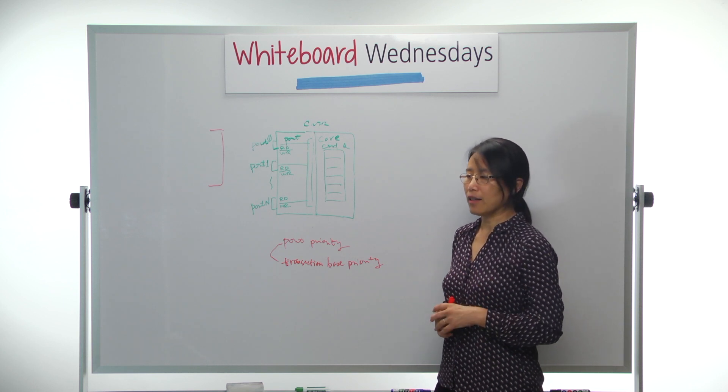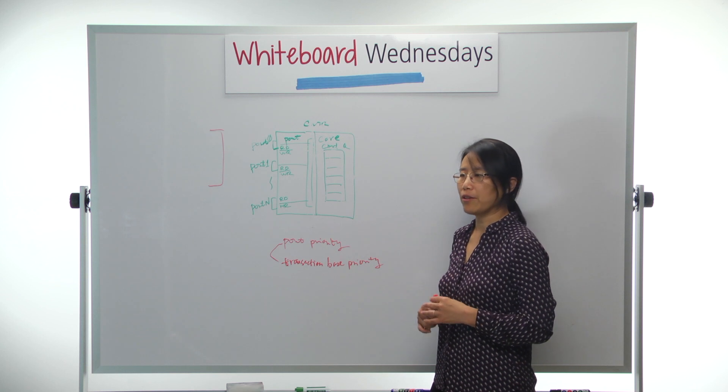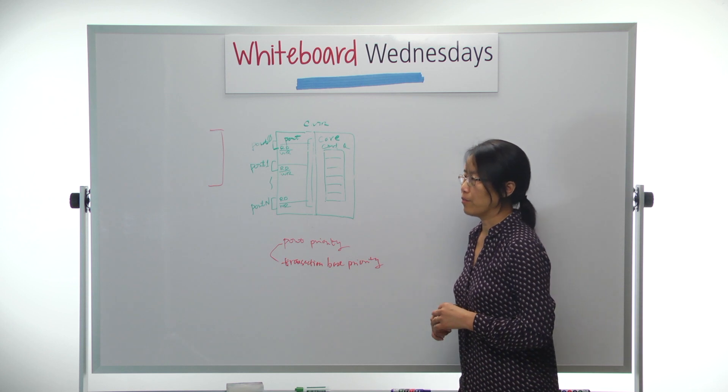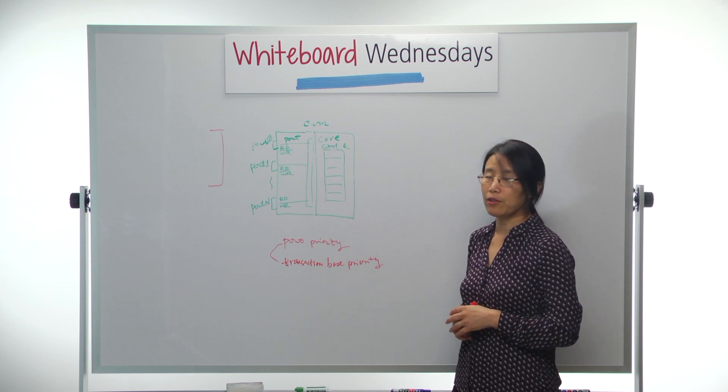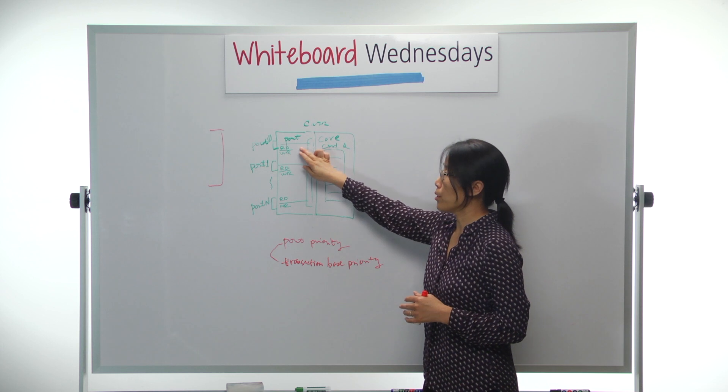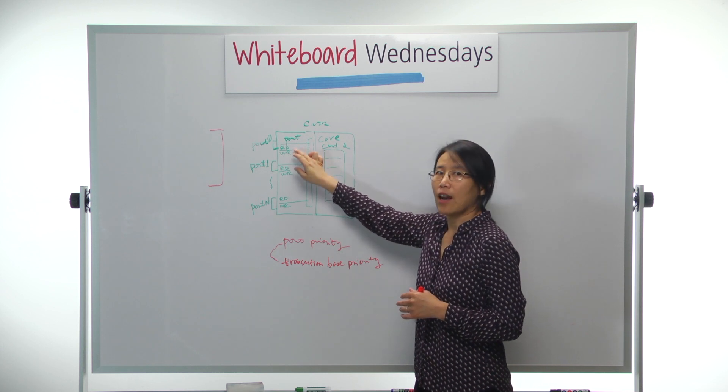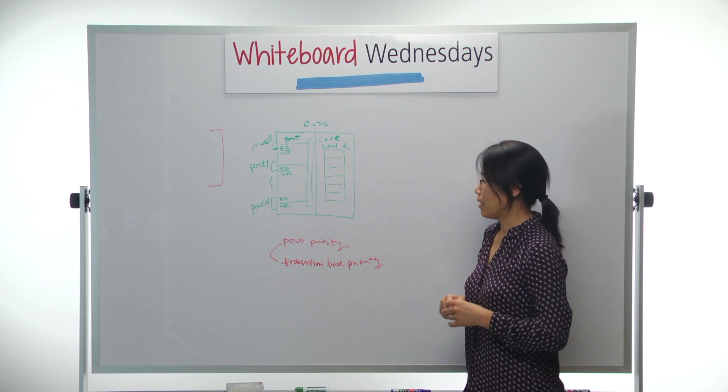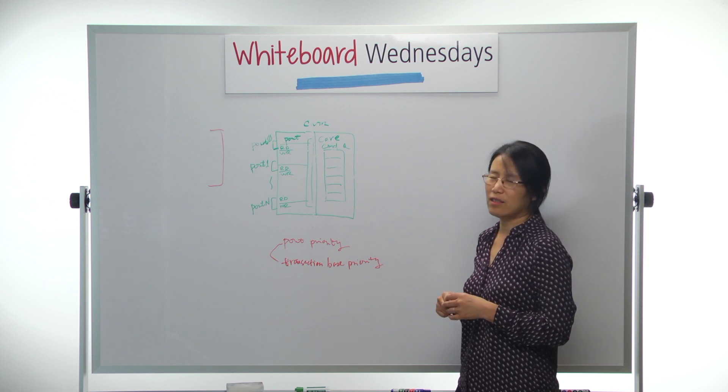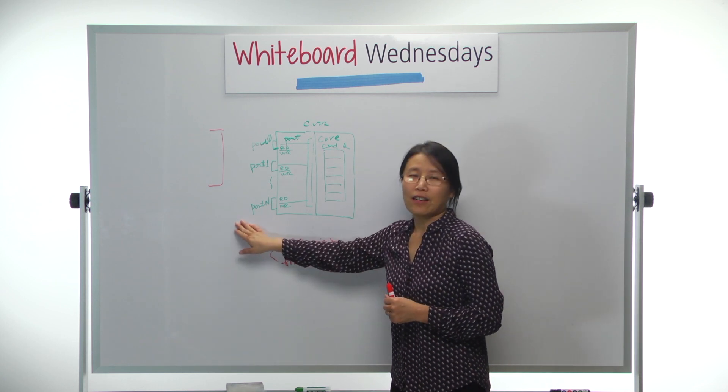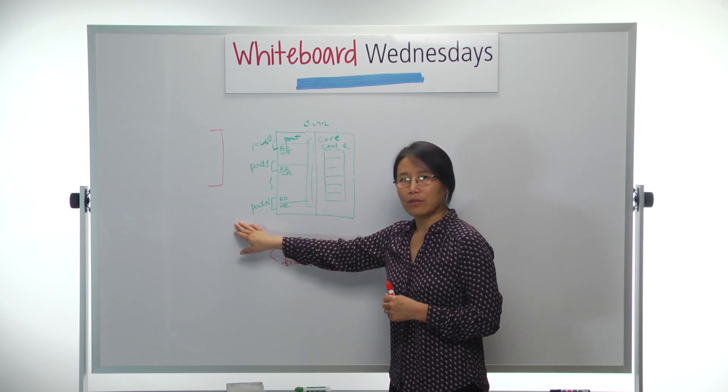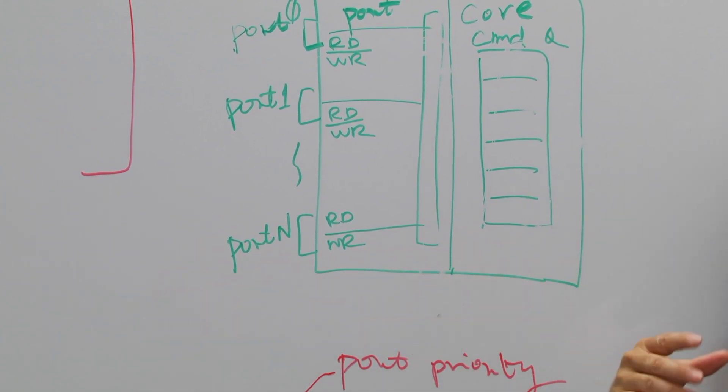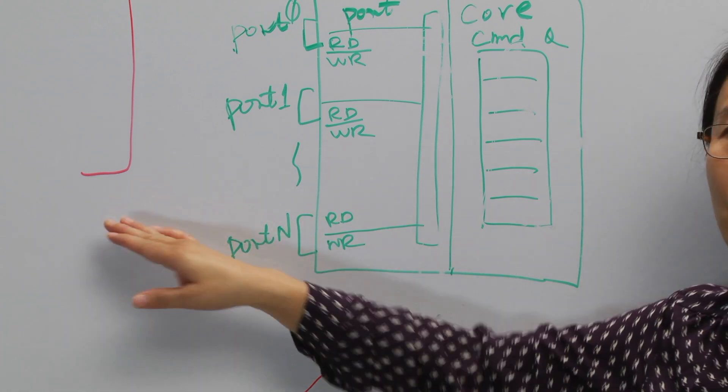Next level, adding a little bit complexity, is considering the priorities. There are two definitions of priorities we have. One is the controller defined port priority, which we can define for each port, the read command and write command with certain priorities. The other one is the transaction based priorities. This is built into the AXI protocol or the Denali protocol. So for each transaction, for each command, they can have its own priorities. They can be defined by the SoC.